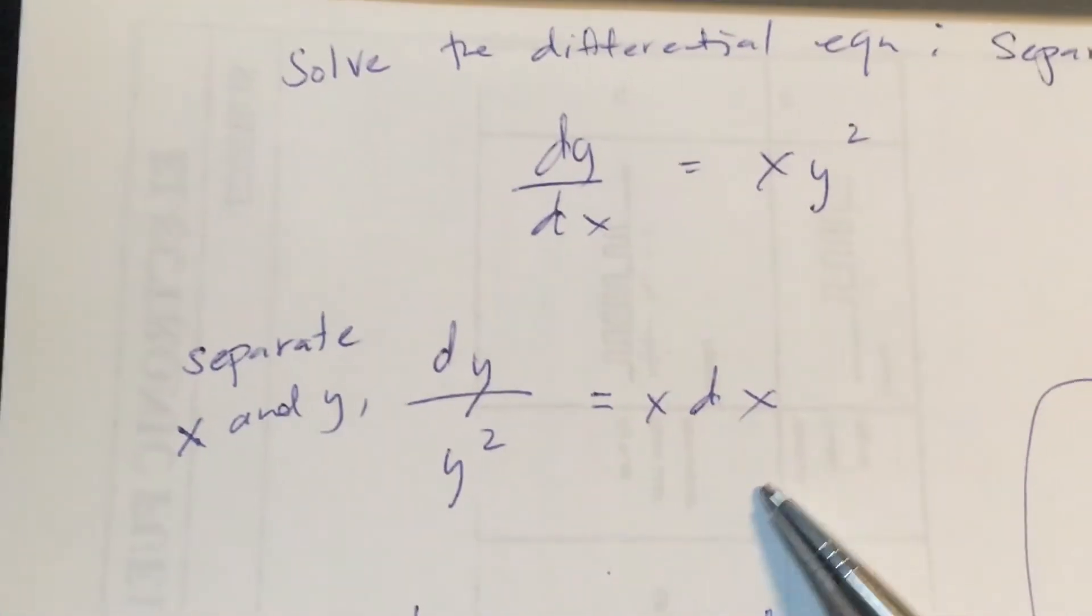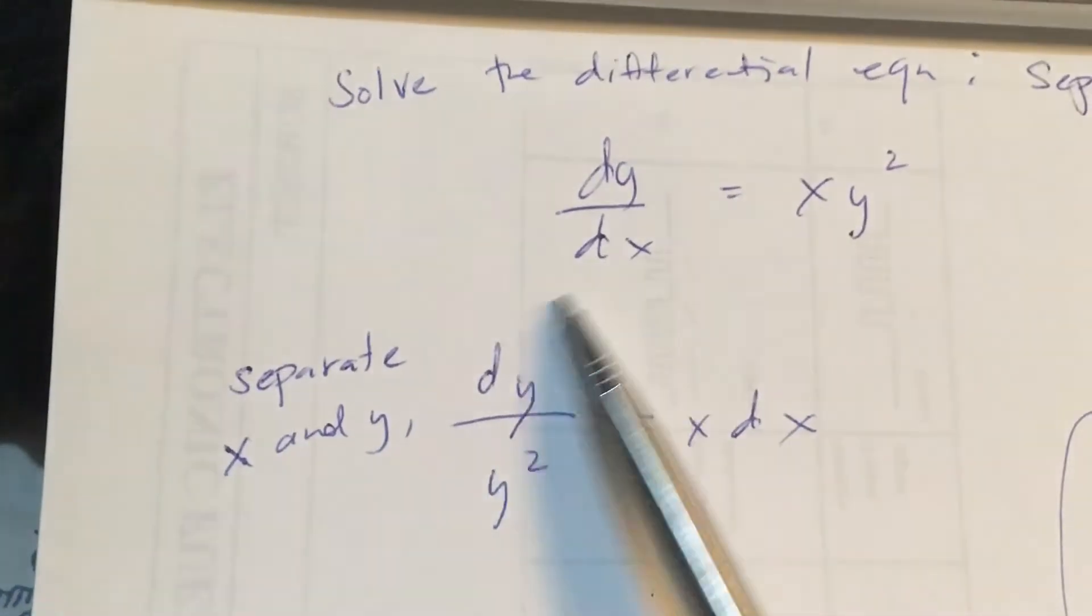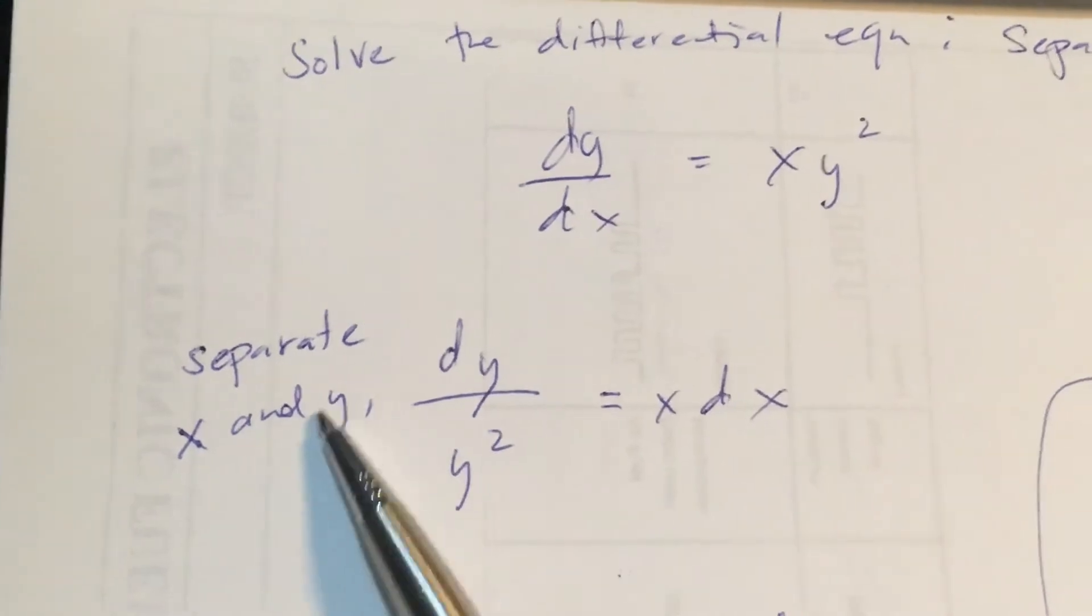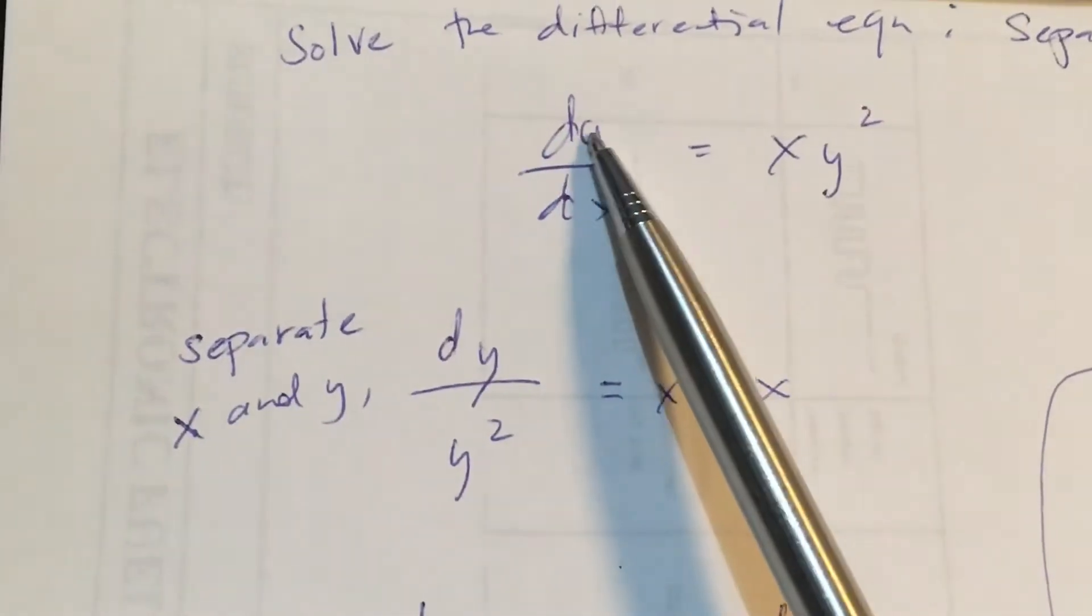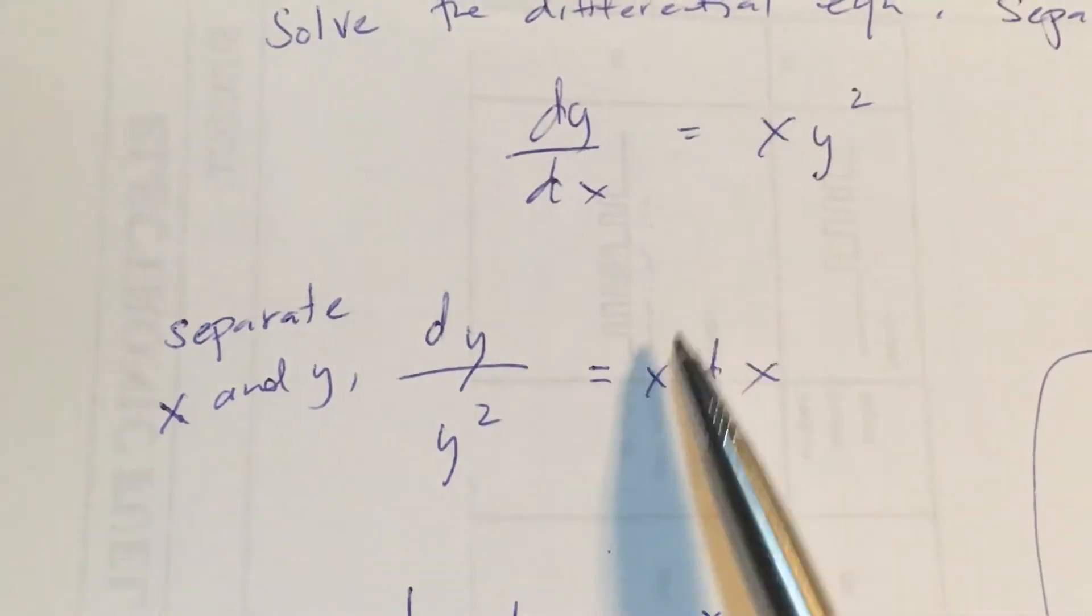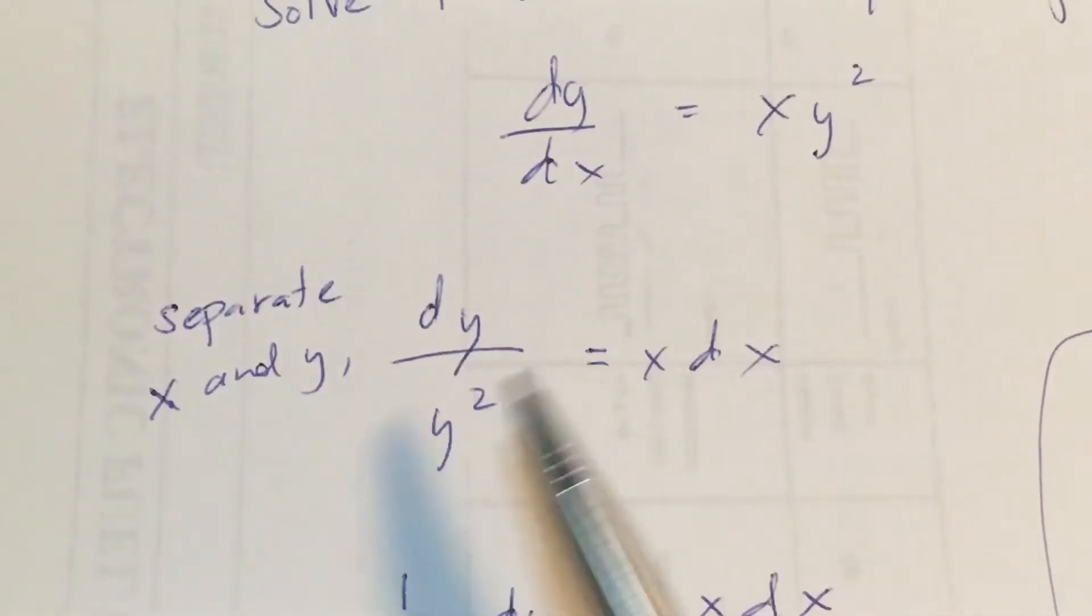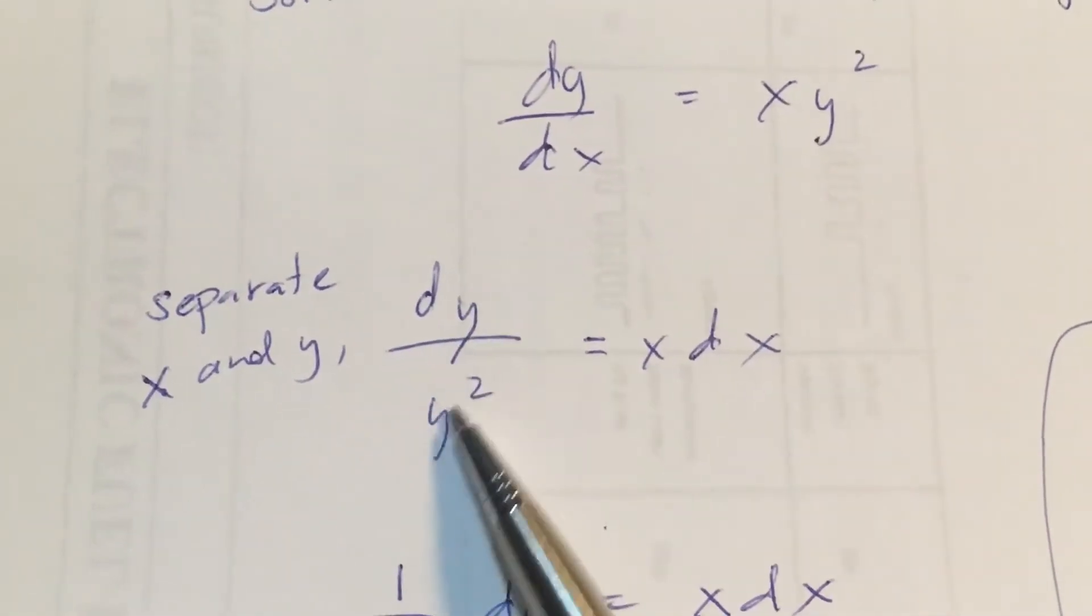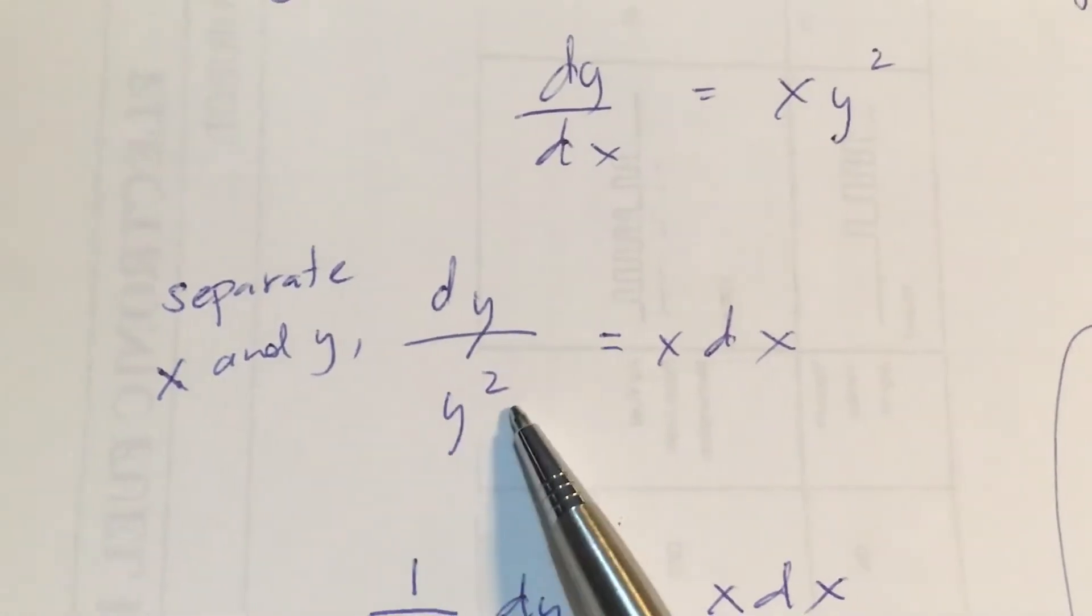Our first step is to separate the x and y variables. Let dy at the left side and let us take the xs at the right side of the equation. dy over y raised to the second power.